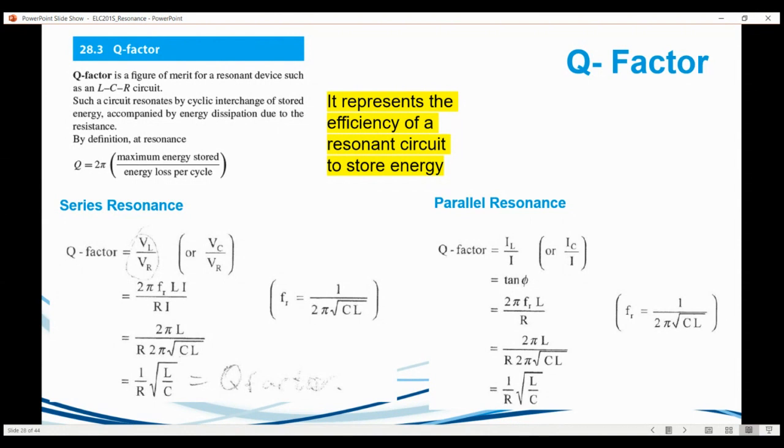So Q will be equal to 1 over R root L over C, which is basically on the right over there, and that is for a series circuit. For parallel circuit, IC and IL are supposed to be the same. I divide by I, so basically we expect the higher current circulating compared to what we actually supplied. They do some play around with the numbers and get exactly the same Q-factor. So the Q-factor is the same for both.